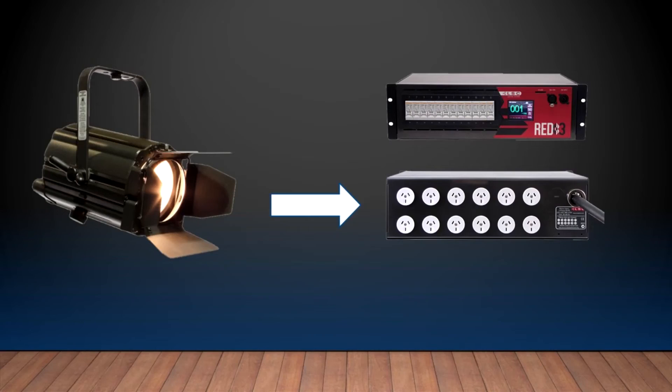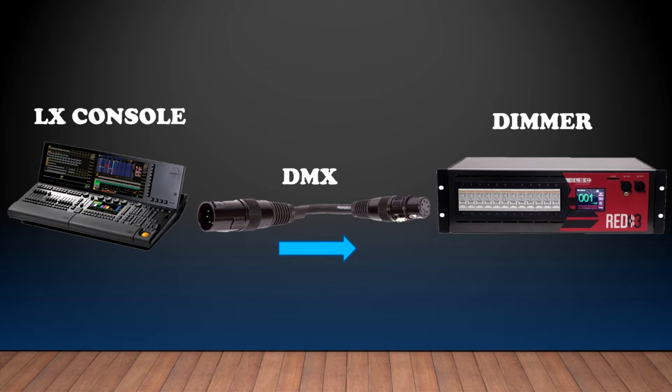Now, how does the dimmer work? Well, you plug in your light into the dimmer, at least the one we picked anyways, so it can handle all of that power. And now that it is plugged in, we can plug in a DMX cable from our lighting console to the dimmer so we can control the dimmable feature for that particular light. But don't worry, we will talk more about this during our signal flow video.